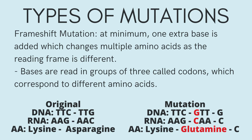Frameshift mutations are almost always significant as they move the entire DNA sequence, and can change all the following amino acids by the addition of one or more extra bases. If this were to happen at the beginning of the DNA chain, then hundreds of amino acids could be altered. These cause the most significant damage. It may create a stop codon at the beginning of a protein chain, for example, making it not create a protein at all.